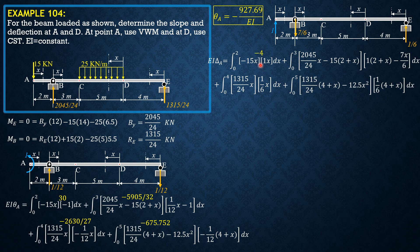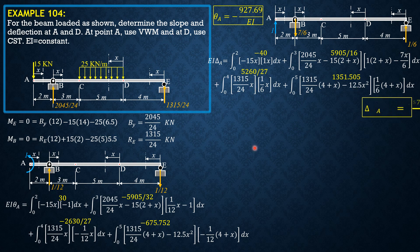The first integral is −40. The second integral is 5905/16. The third integral is 5260/27, and the fourth integral is 1351.505. Combining these values, δ_A can now be computed: δ_A equals 1875.38 over EI.